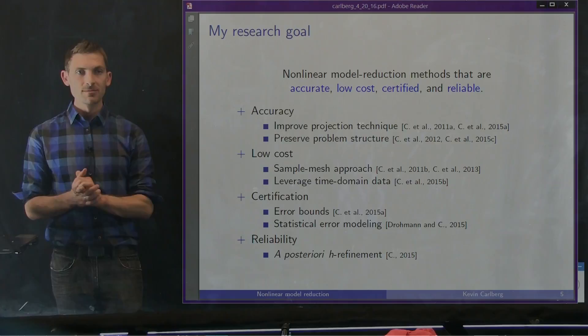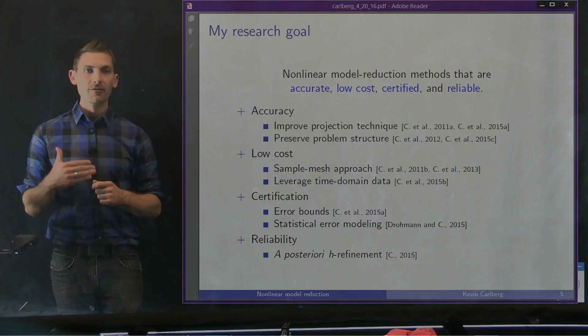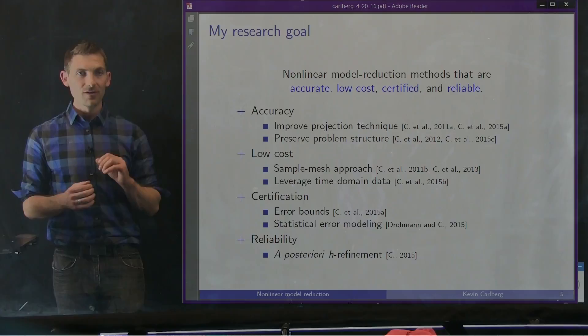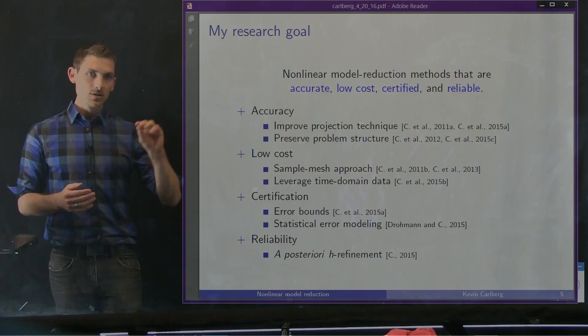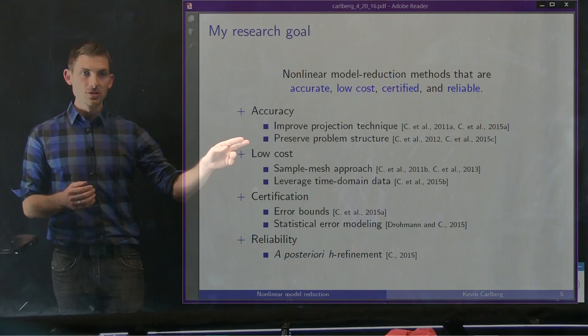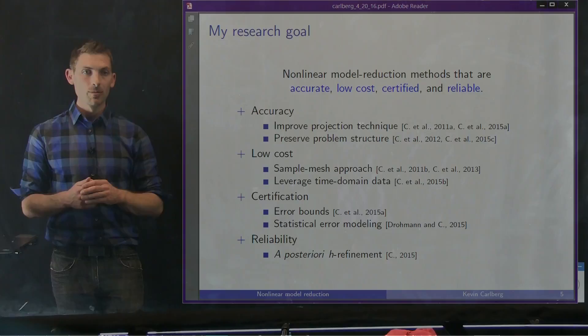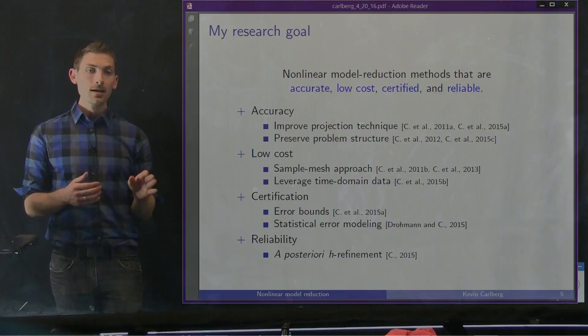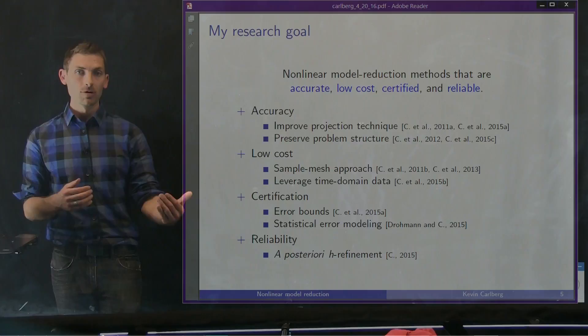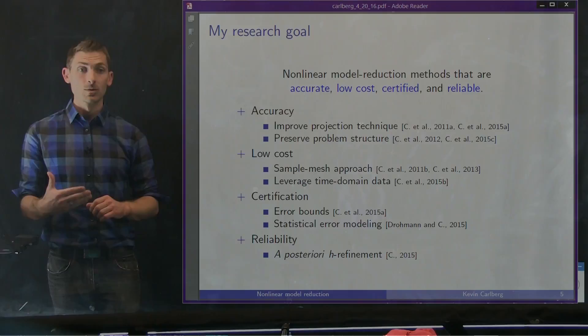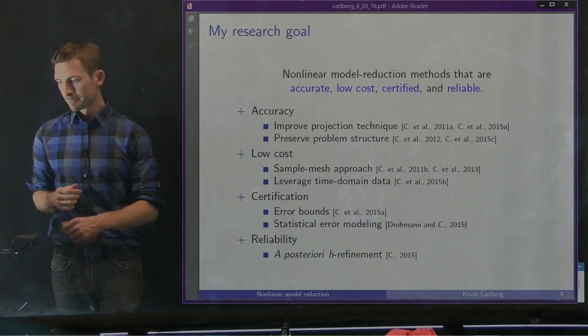The overall goal of my research and my collaborators' is to bring nonlinear model reduction up to the same level of maturity as enjoyed for simpler systems like LTI and elliptic-parabolic PDEs. Towards that end, we've tried to develop methods that make nonlinear model reduction accurate, low-cost, certified, and reliable. To make them more accurate, we've developed an improved projection technique. We've also done work to preserve specialized problem structure, particularly in the Lagrangian dynamical system case, and made these models low-cost via the sample mesh approach.